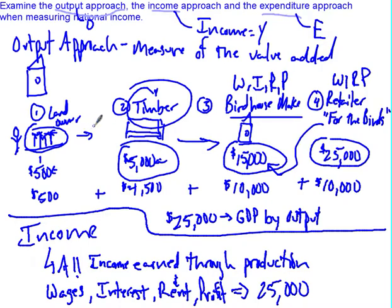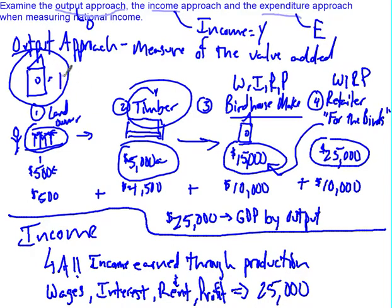The income approach is a measure of the income earned in the production of a product. Think of producing 1,000 birdhouses — all the wages, interest, rent, and profit accumulated through that entire production process is what we measure. And if you remember the circular flow, this is the bottom curve.